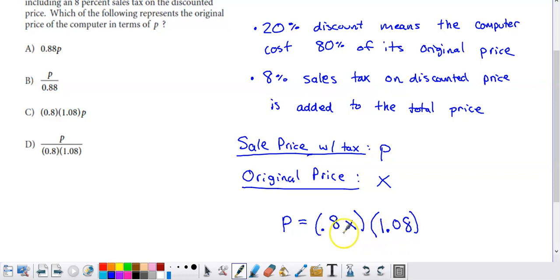But everything's multiplied together here. So it doesn't matter what order I multiply these three values together in, 0.8, X, and 1.08.